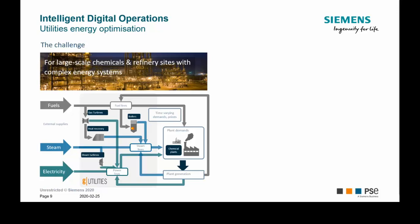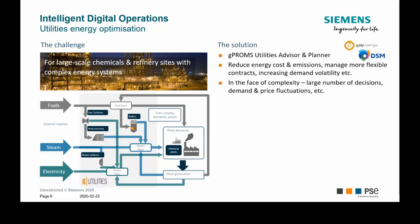Quite often customers perform an energy audit, but the problem is this creates only short-term savings. When fouling occurs during operation, the behavior of the plant changes continuously, so you need to perform another energy audit — which is not sufficient. We therefore thought of a solution: dynamic optimization for such a utility system, which is really crucial to optimize daily.